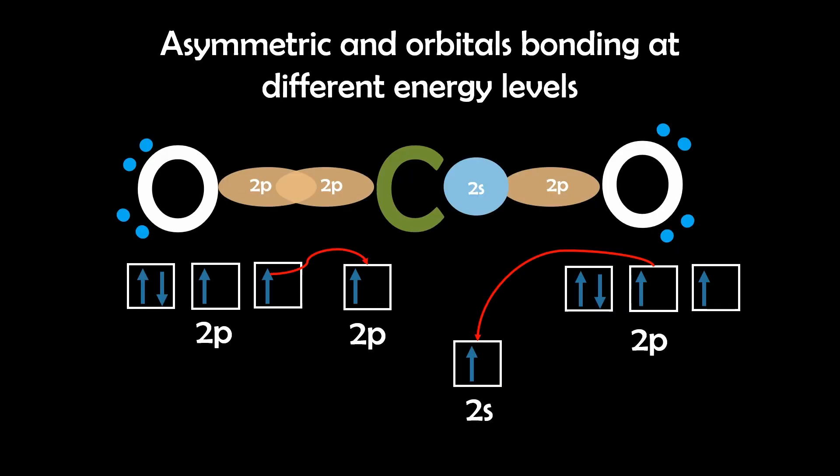However, this is not enough, because the bonds formed would be unequal due to each of these S and P orbitals having different energy levels. This would lead to an asymmetric molecule with bonds of varying energies, resulting in instability.